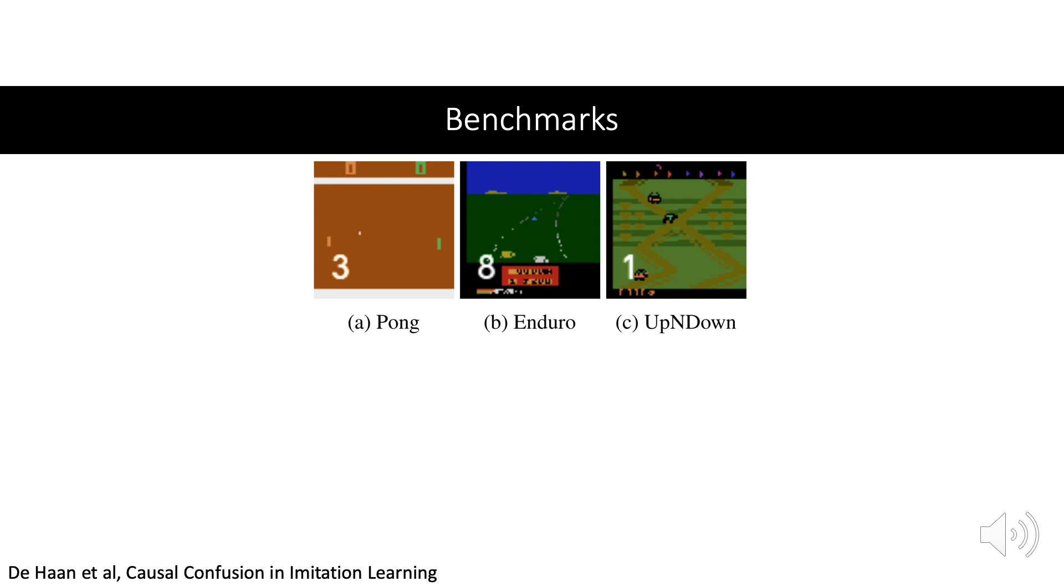Additionally, we test on the benchmark with a visual state. On 3 games of the Atari simulator, we add a nuisance variable by simply drawing the past action as a digit onto the frame. Then we use a trained VAE to represent the state as 30 independent random variables, each serving as a potential cause.